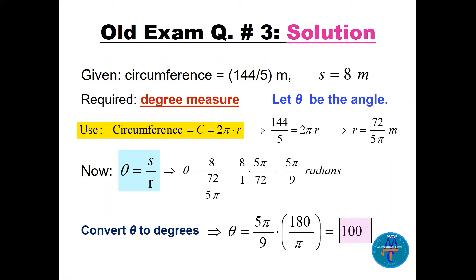Solving for r gives 72/(5π) meters. Now using the arc length formula s = rθ, theta equals s over r, which is 8 divided by 72/(5π). Dividing two fractions — keep the first and multiply by the reciprocal — gives 5π/72. Simplifying: 8 times 5π/72 equals 5π/9 radians. Converting to degrees: 5π/9 times 180/π gives 100 degrees.